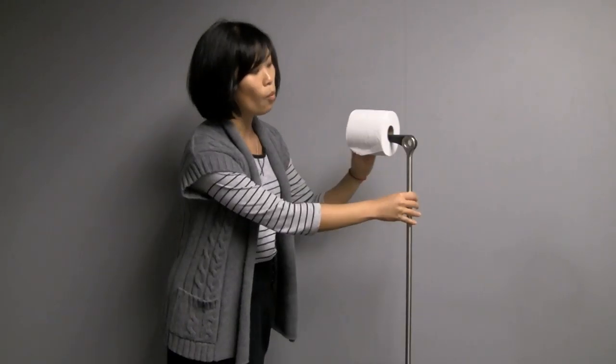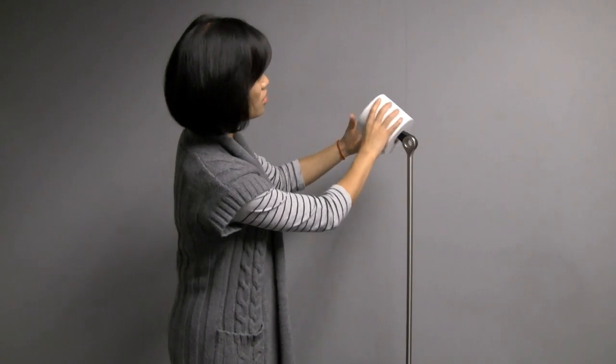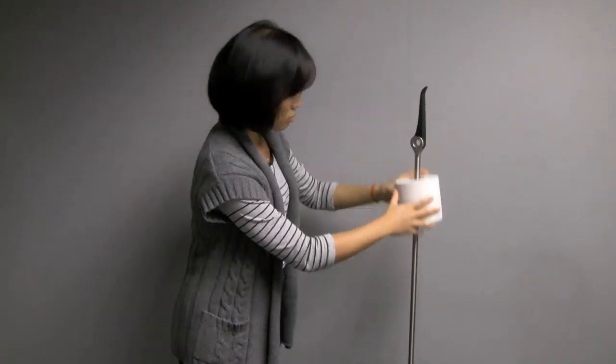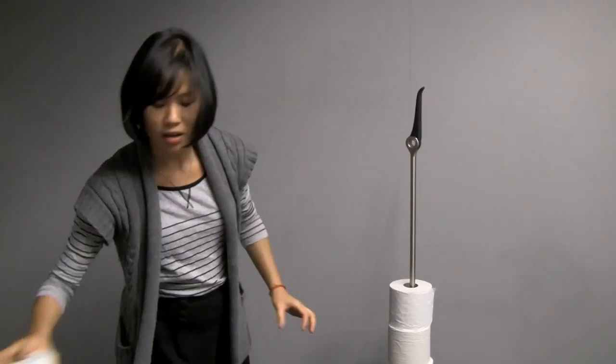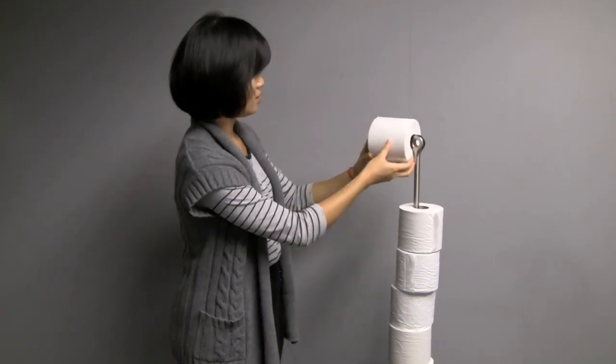Token doesn't just hold one toilet paper roll. It holds more than one. Watch me. All you need to do is just rotate.